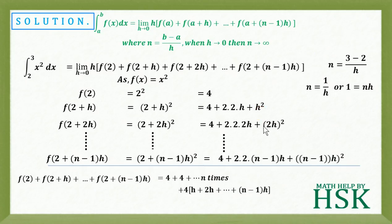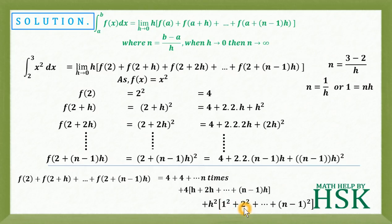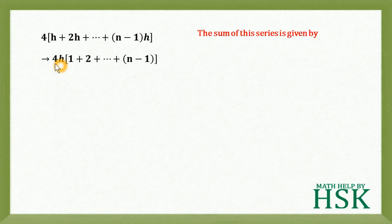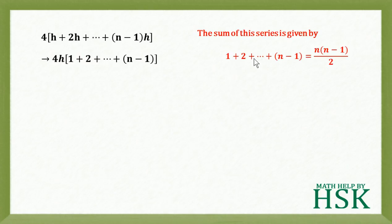For the squared terms: h squared plus 2h squared and so on up to n minus 1 into h whole squared. Taking h squared common, we get h squared times 1 squared plus 2 squared and so on up to n minus 1 whole squared. The sum 1 plus 2 up to n minus 1 equals n times n minus 1 upon 2, so this becomes 4h times n into n minus 1 upon 2.